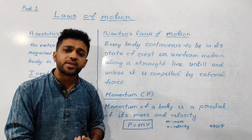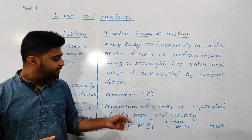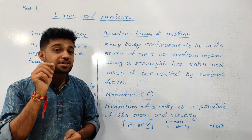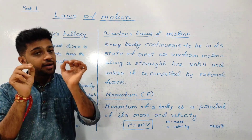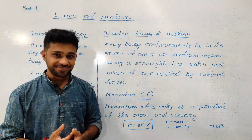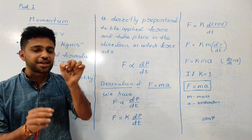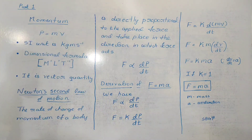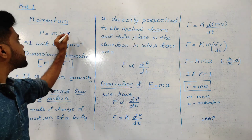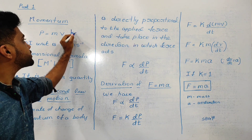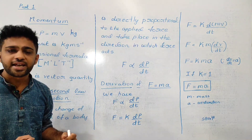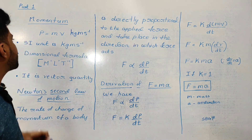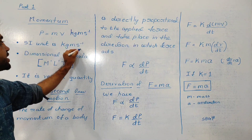We will study the concept of momentum related to this. We will study the SI unit and dimensional formula, then move to the second and third laws. The SI unit of momentum: momentum is mass into velocity. Mass is in kg, velocity is in meters per second. So the SI unit of momentum is kg meter per second.